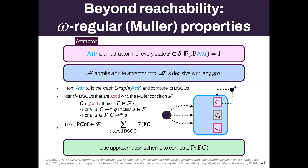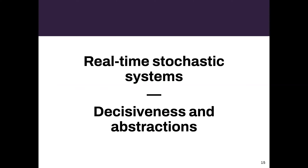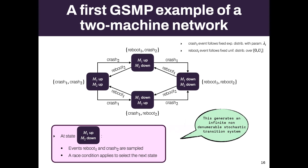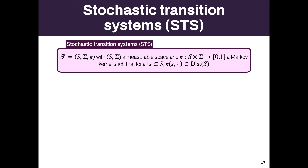Why is this useful for more general real-time stochastic systems, which are more complex because we have continuous time and continuous space? Let's look at the example we had before. I want to show how we can formalize continuous time stochastic systems.